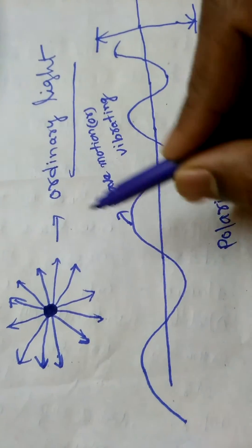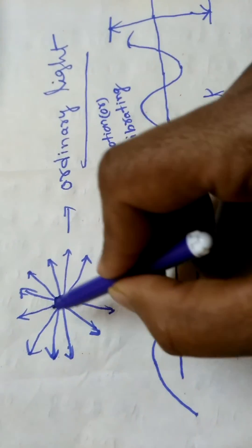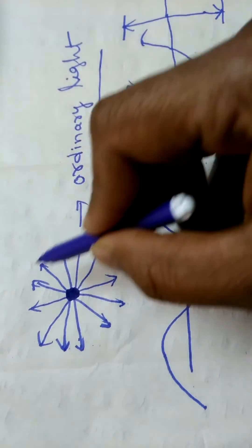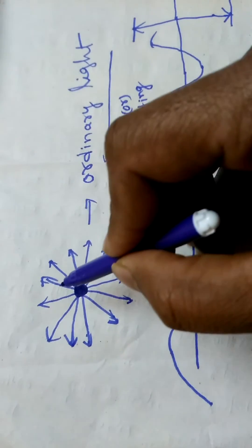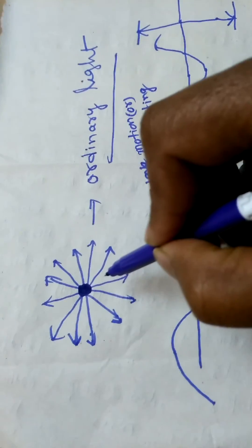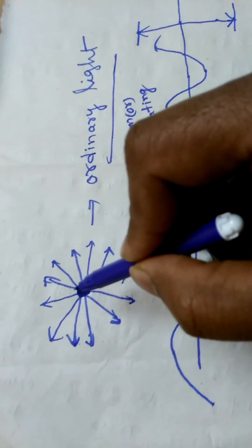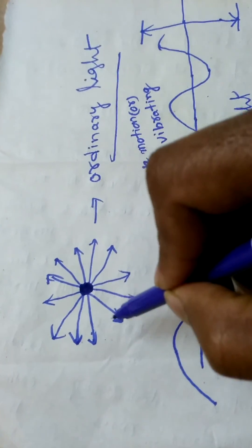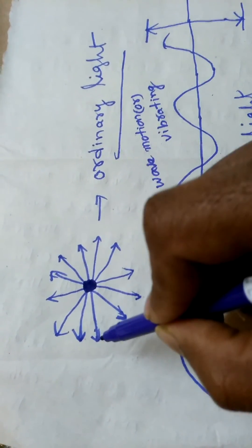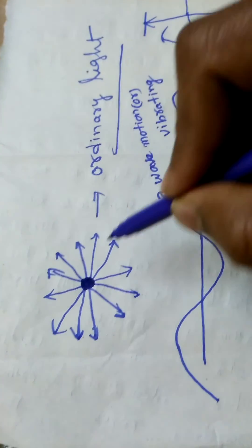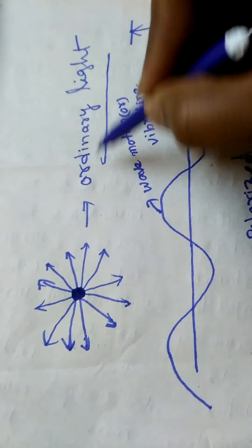In the case of ordinary light, it vibrates in all directions which are perpendicular to each other, or at right angles to each other, in straight lines. So it is called ordinary light.